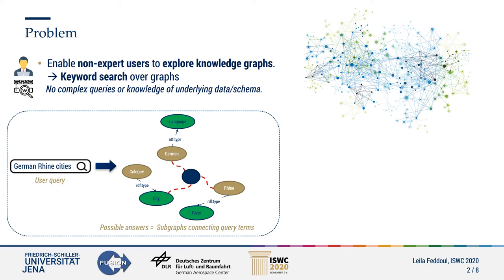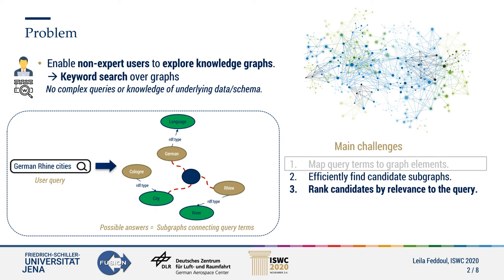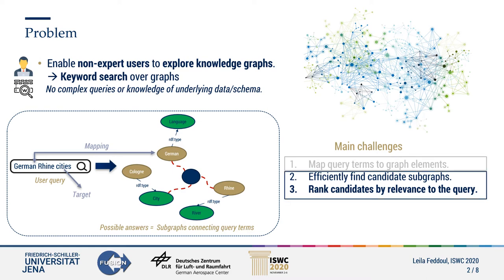In the context of knowledge graphs, a possible answer to the query is a subgraph that connects the nodes corresponding to the query terms. To achieve this task, the first step is to map keywords to graph elements. At this stage of research, we assume that keyword annotations and the type of entities to retrieve are given, and we focus on automatically finding candidate subgraphs and ranking them effectively.